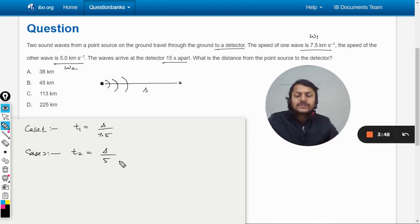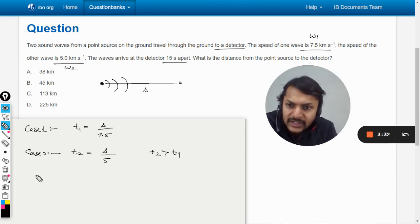Units should be kept in mind. This is t1 and t2. The difference between the times is given as 15 seconds. Which will be more? t2 is more than t1, so delta t, that is t2 minus t1, is given as 15 seconds.